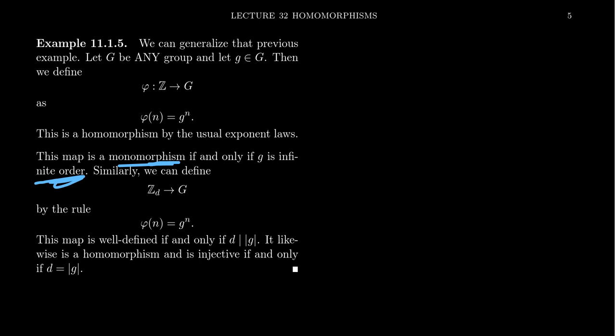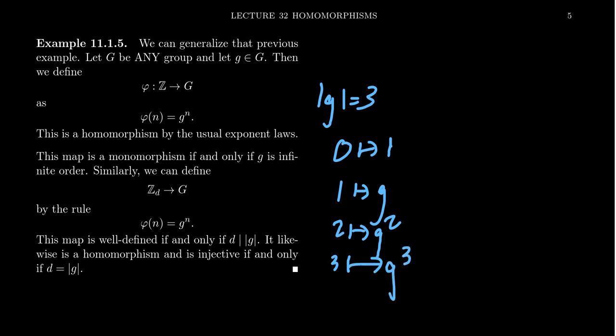Some other things I can mention here is that this map will be a monomorphism if and only if g has infinite order. Because if g has a finite order, let's say like the g has order three like that, then you're going to get the following like zero will map to the identity one. One will map to g, two will map to g squared, three would map to g cubed, which of course is equal to the identity. So this maps with here right here. So it wouldn't be one to one in that case. And that's basically the argument.